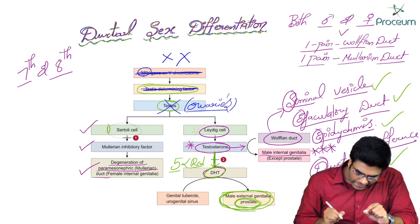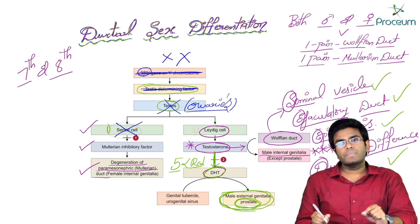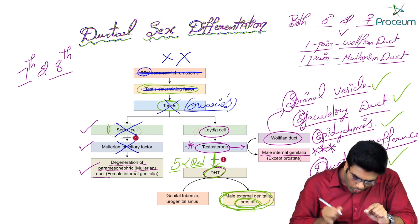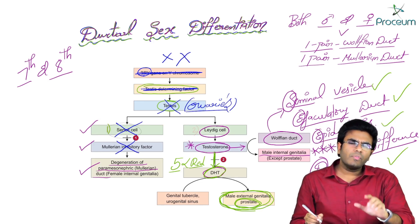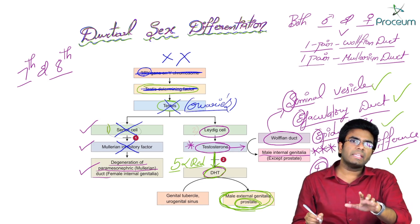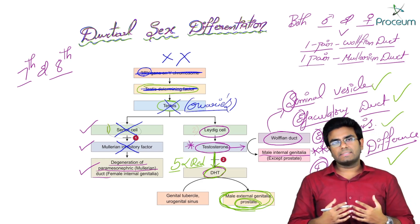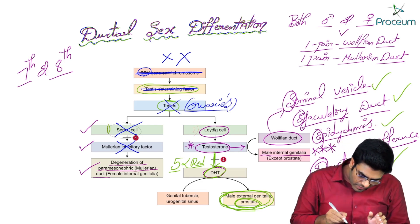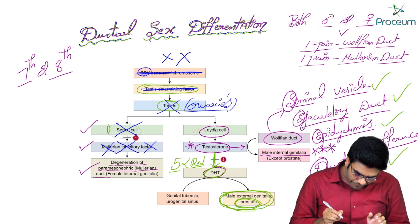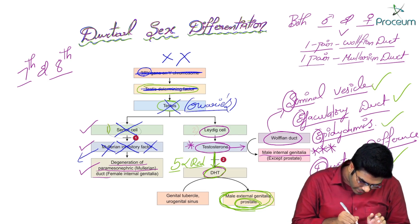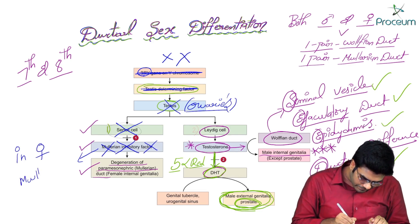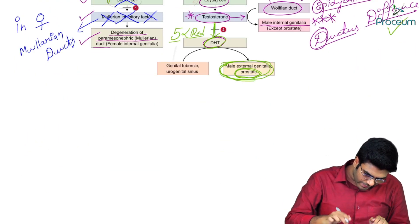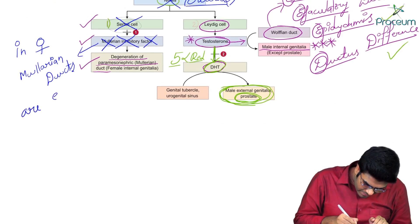Inside the ovary, you cannot expect Sertoli cells, so there is no production of Anti-Mullerian Hormone or Mullerian Inhibiting Factor in a female. Because there is no Mullerian Inhibiting Factor, the Mullerian duct is going to be expressed in a female embryo — the Mullerian ducts are expressed.